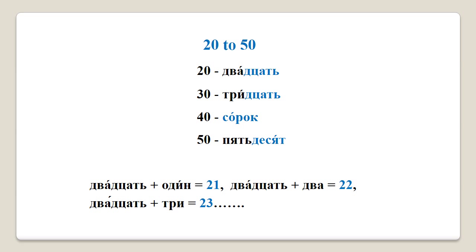двадцать, тридцать, сорок, пятьдесят. Excellent! Well done! Now, numbers 20 and 30 have a shorter version of a teen ending. Forty is a complete exception as it doesn't look anything like four.